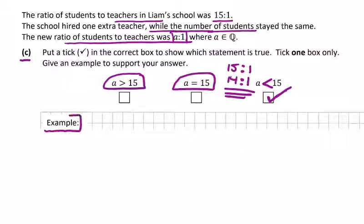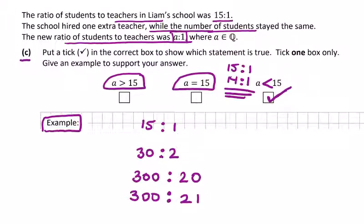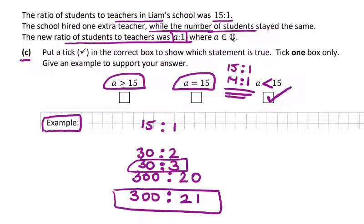It says give an example to support your answer. So if we just make up a number of students - if it's 15 students to 1 teacher, it could be 30 students to 2 teachers. If we multiply both by 10, it could be 300 students to 20 teachers. So now we're going to have 21 teachers. We're still going to have 300 students. Something along these lines will work. We could have 30 students, one extra teacher would be 3. Because we don't know, there's many correct answers here.